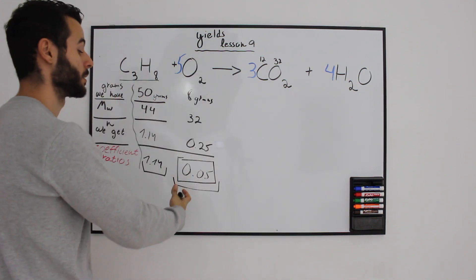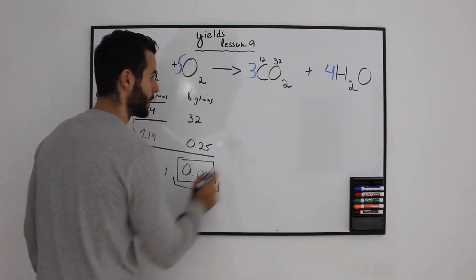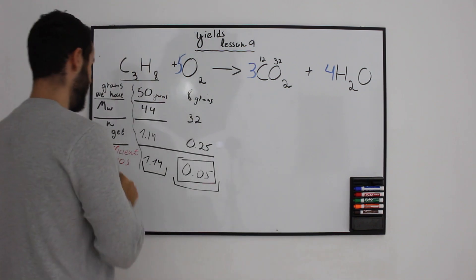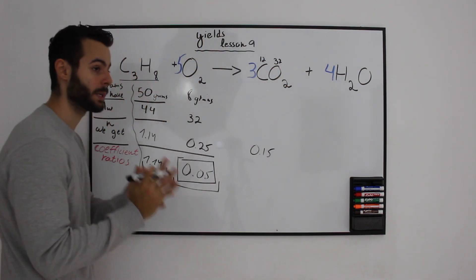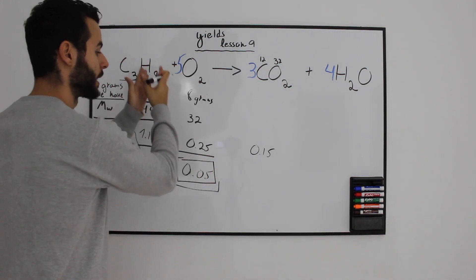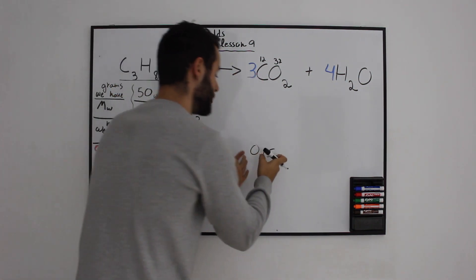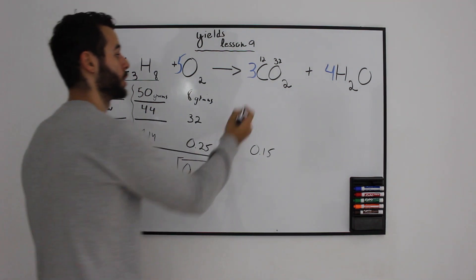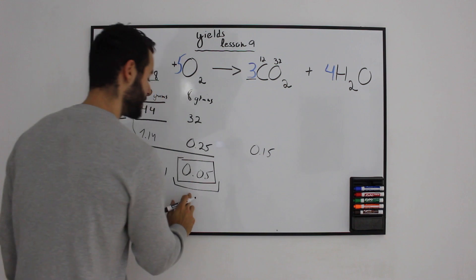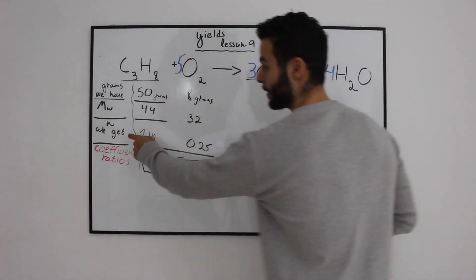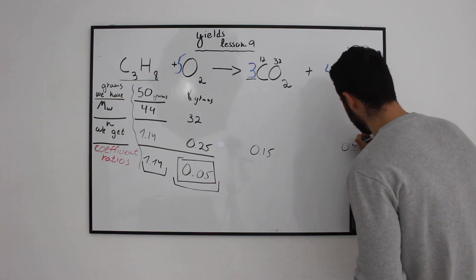Using the table makes it easy to get the amount of products from the limiting reactant. We take the 0.05 moles and multiply by the coefficient of each product. For carbon dioxide, we multiply 0.05 by 3 and get 0.15 moles of CO₂. For water, we multiply 0.05 by 4 and get 0.20 moles of H₂O.